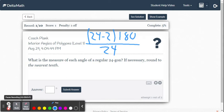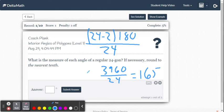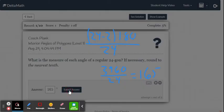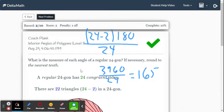So I'm going to get my calculator out for this one. So on my calculator, we get 24 minus 2 is 22. So 22 times 180 is 3,960 degrees. And then we divide that by 24, and we end up getting 165 degrees. We don't have to worry about rounding on this one. So we just type in 165 and submit. We got that one right.